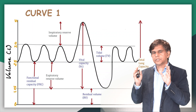Now let's look at the third curve: the volume-time curve. Time is on the x-axis and volume on the y-axis. You ask the patient to take a deep breath and blow it out, then measure how much they expire in one second. On this normal curve, FEV1 is marked at about 4.2 liters, and the forced vital capacity is around 6 liters.